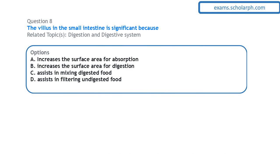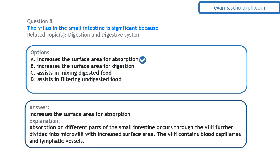Next question on digestion: the villus in the small intestine is significant because it increases the surface area for absorption. Absorption of nutrients occurs in the small intestine through the villi.